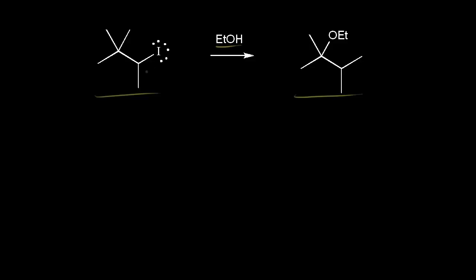The first step should be loss of a leaving group. So these electrons come off onto the iodine to form the iodide anion. We're taking a bond away from this carbon in red, so the carbon in red is going to get a plus one formal charge. We're going to form a carbocation, and the carbon in red is this carbon, so this carbon gets a plus one formal charge.